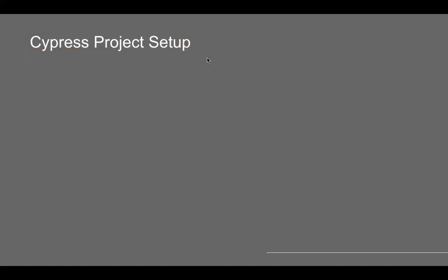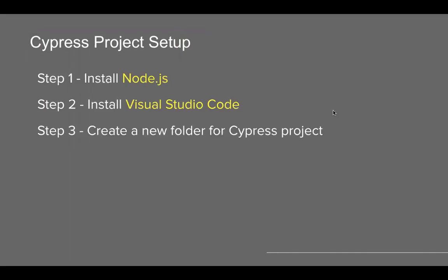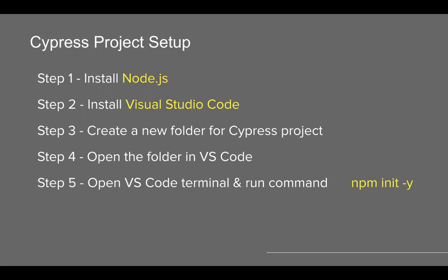In the next video, we will learn the Cypress project setup. In that video, you will see all the steps to get Node.js and Visual Studio Code, create a new folder for our Cypress project, open it in VS Code, run the command npm init -y, and then run npm install Cypress. Now there is an update, and therefore I'm adding this video before the next video so that when you watch it, you will not get confused and you will see what the update is.